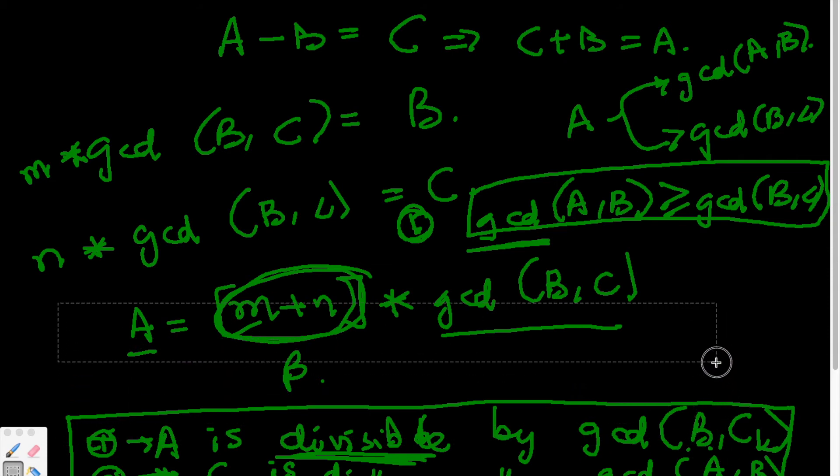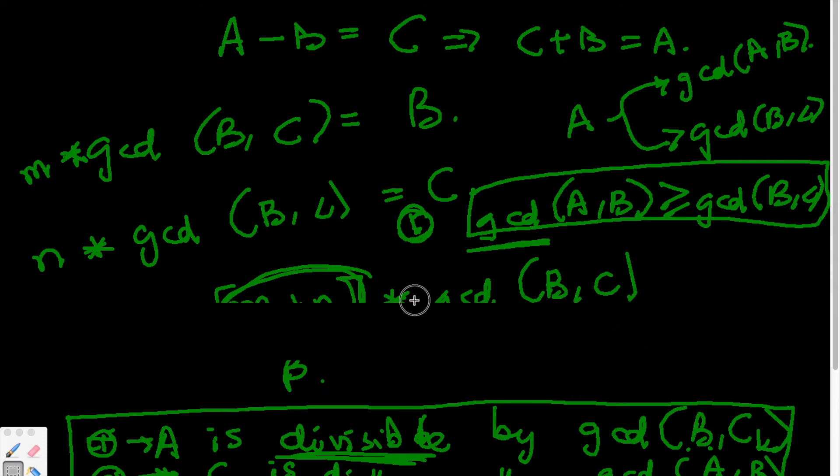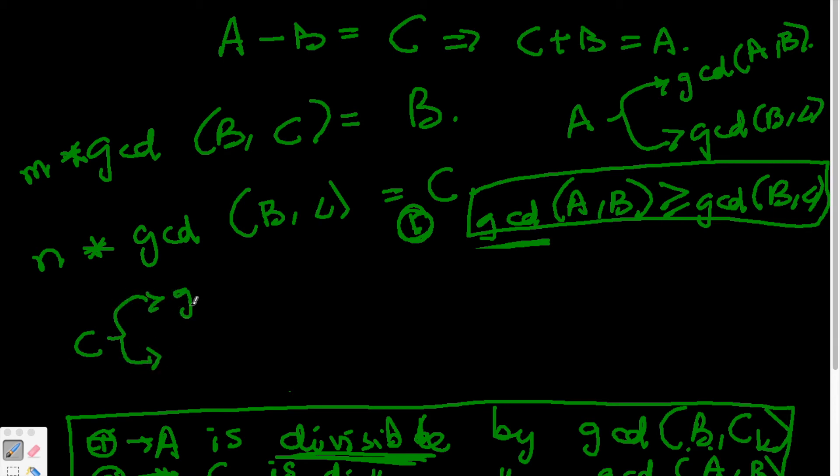Similarly, we are going to make a point for C in a very similar way. What we are going to say is that C is divisible by both the gcd(A,B),